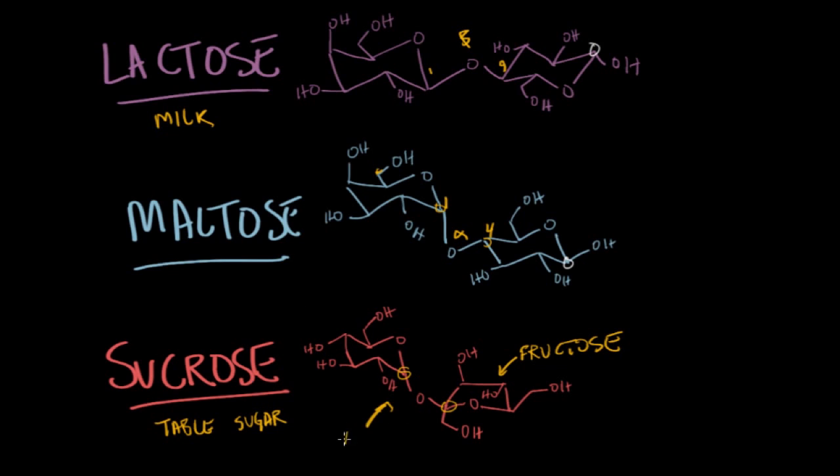What happens is you have two acetals that are formed. We've got an acetal right there. Remember, an acetal is when a carbon is linked to an OR group over here and an OR group over here. Then you have a second acetal at the fructose's anomeric carbon.